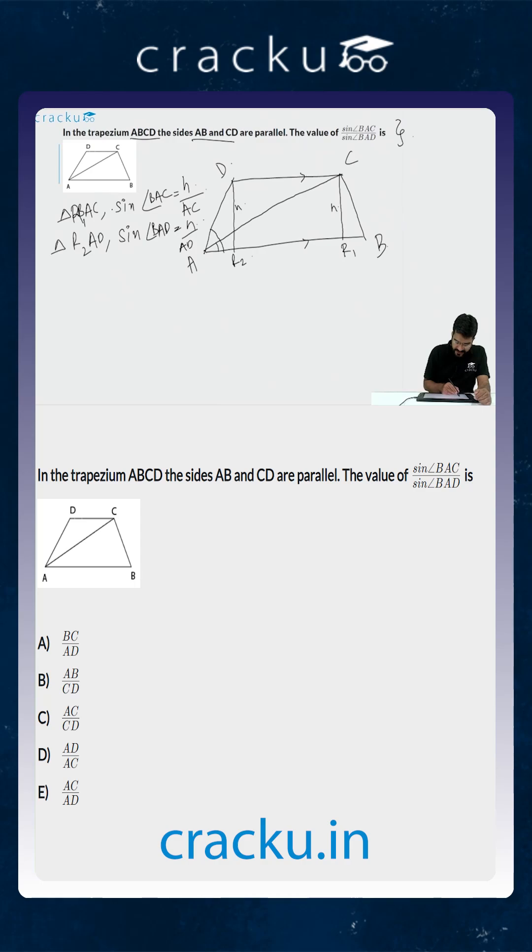Now when you are required to find out the ratio of these two sines you just divide H by AC, whole by H by AD, and you are going to get AD by AC which is equal to sin of angle BAC by sin of angle BAD.